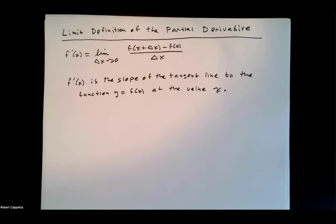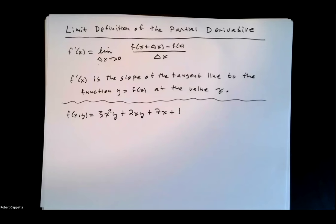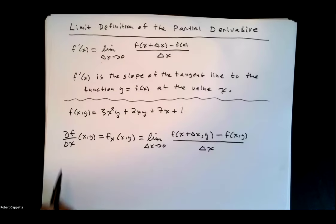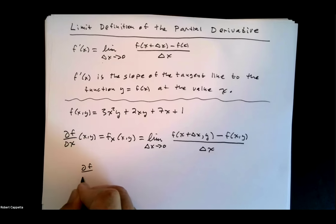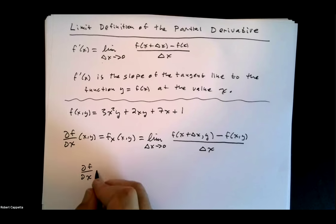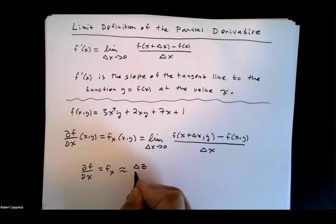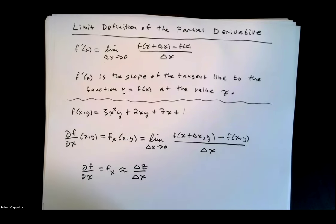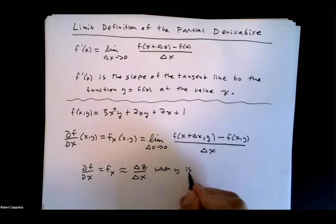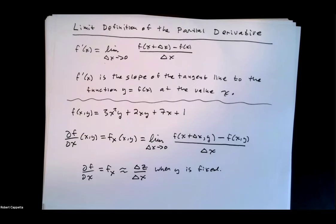Let's take a look at an example. We have f of x, y equals 3x squared y plus 2xy plus 7x plus 1. We want to define the partial derivative of f with respect to x. The notation we use is the partial derivative of f with respect to x using this special-looking d — that's one notation. Another notation is f with a subscript x. This represents approximately the change in the z value, the height, divided by the change in the x value when the y value is fixed.